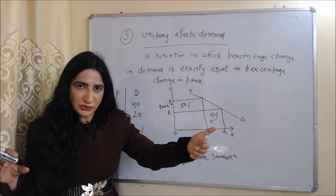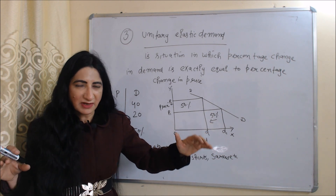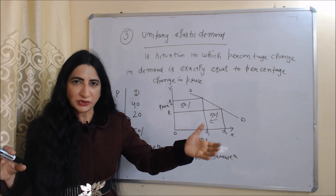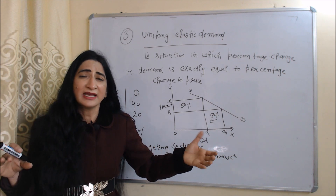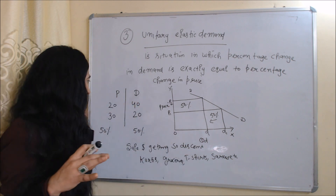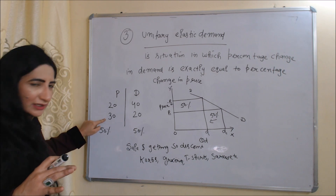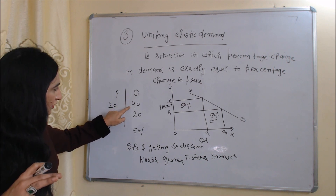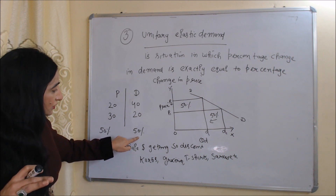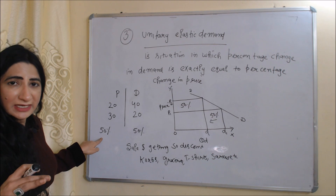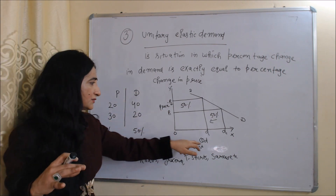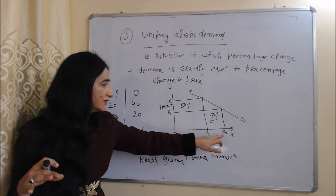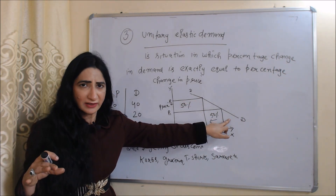The next type is unitary elastic demand. Unitary elastic demand is a situation in which the percentage change in demand is exactly equal to the percentage change in price. In this table, our price increases from 20 to 30 — a 50 percent increase. In response, our demand reduces from 40 to 20 — also a 50 percent reduction. In the diagram, our price increases by 50 percent and demand reduces by 50 percent. DD is our demand curve.